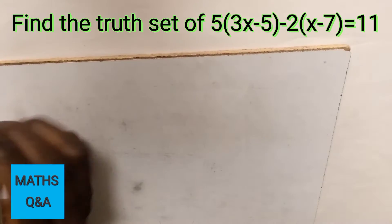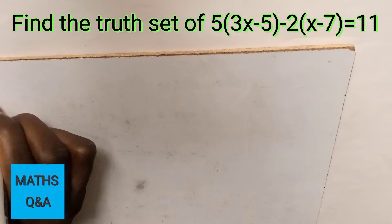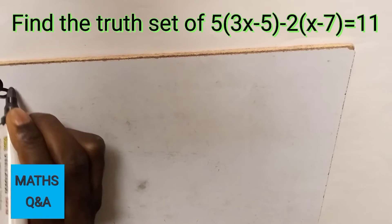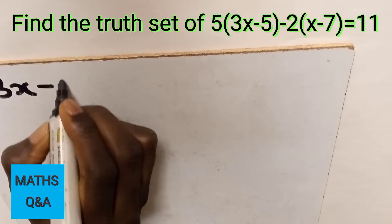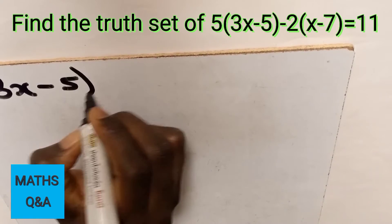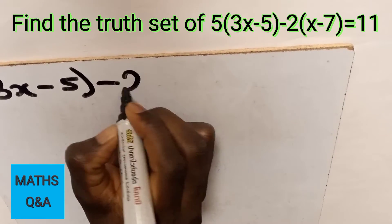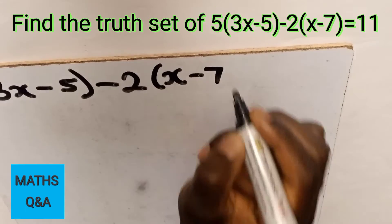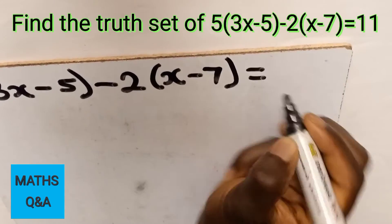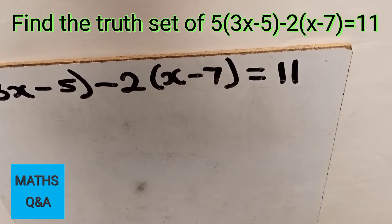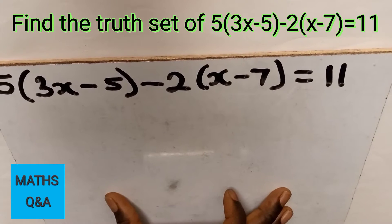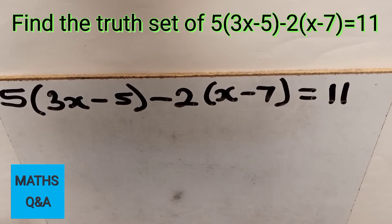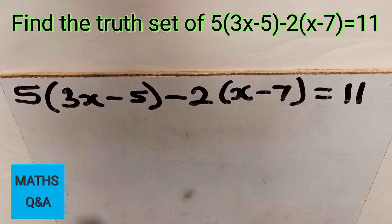Find the truth set of 5(3x-5)-2(x-7)=11. We have to find the truth set of this equation. Now what we have to do is to first